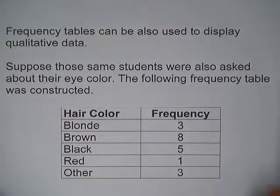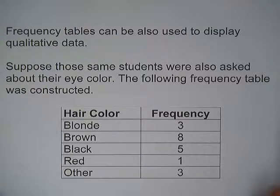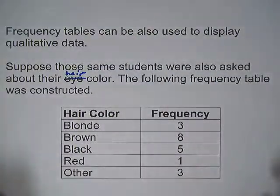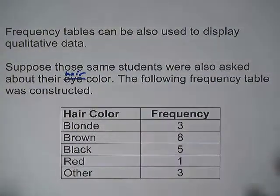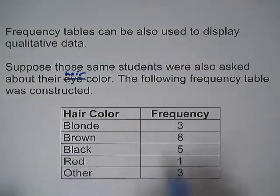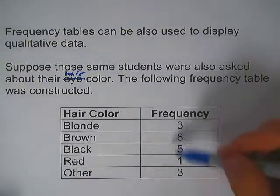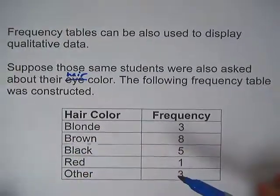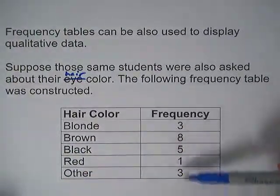Frequency tables can also be used to display qualitative data. So suppose the same students were also asked about their hair color. The following frequency table was constructed. So hair color was blonde, brown, black, red, or other. So notice here, instead of the numbers, we just have our categories. And here we just have the frequency.